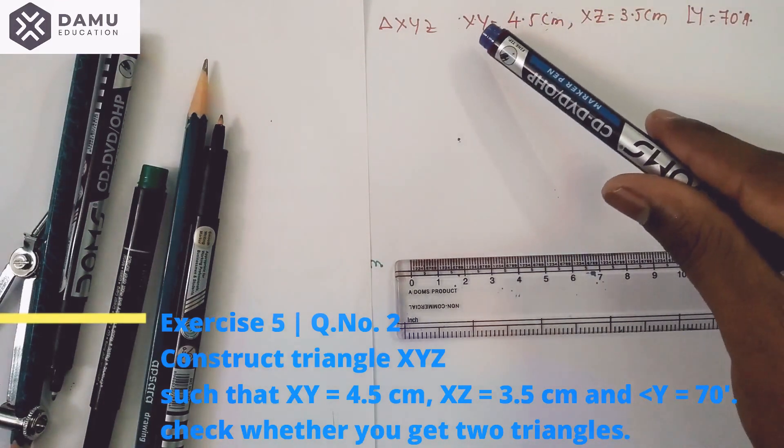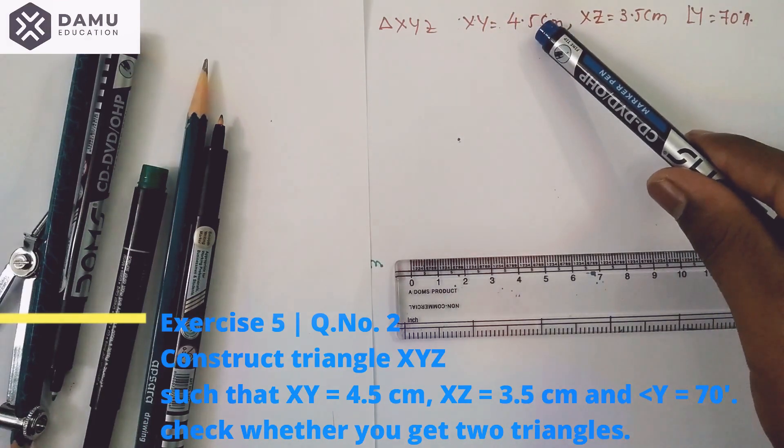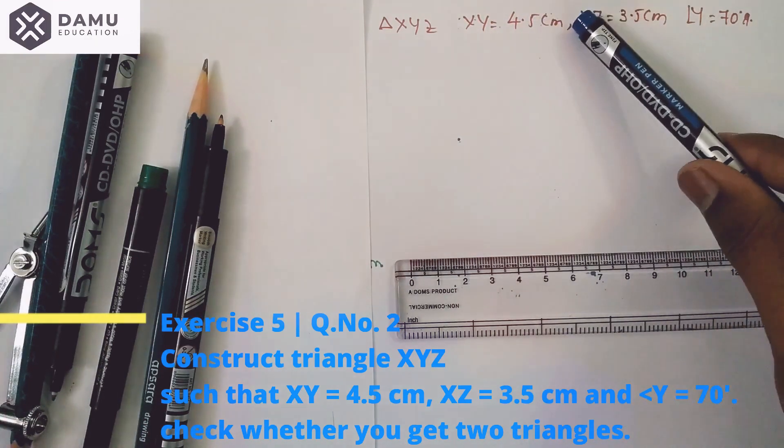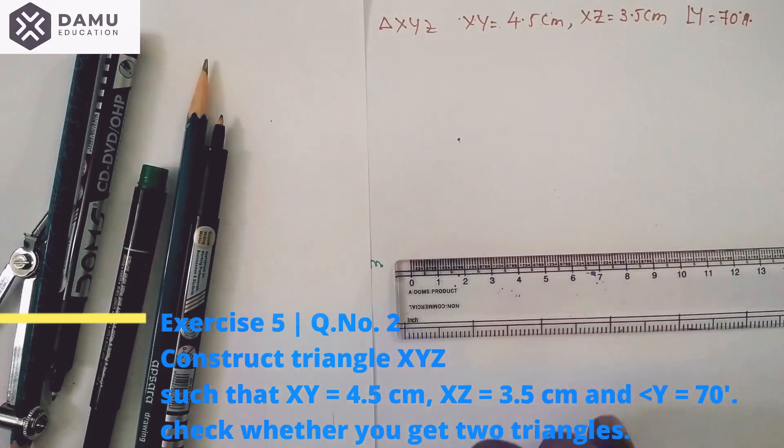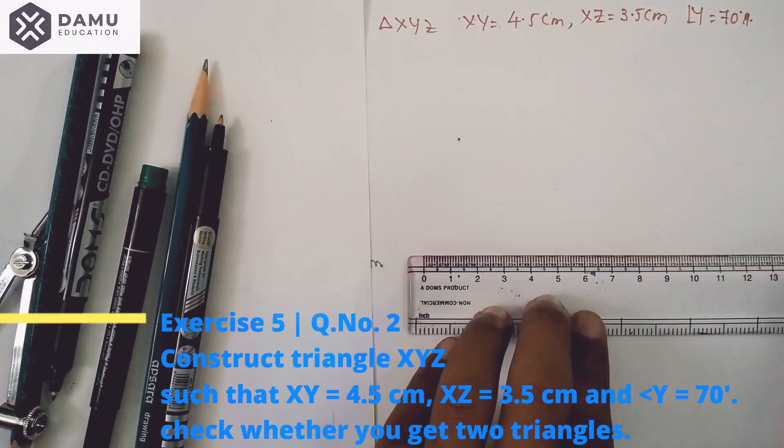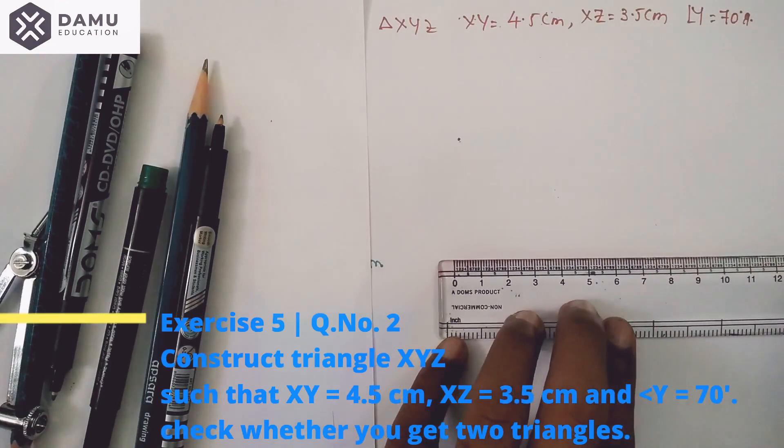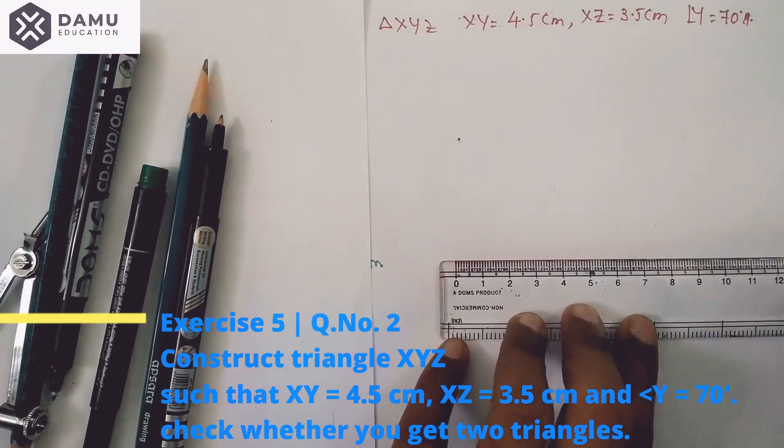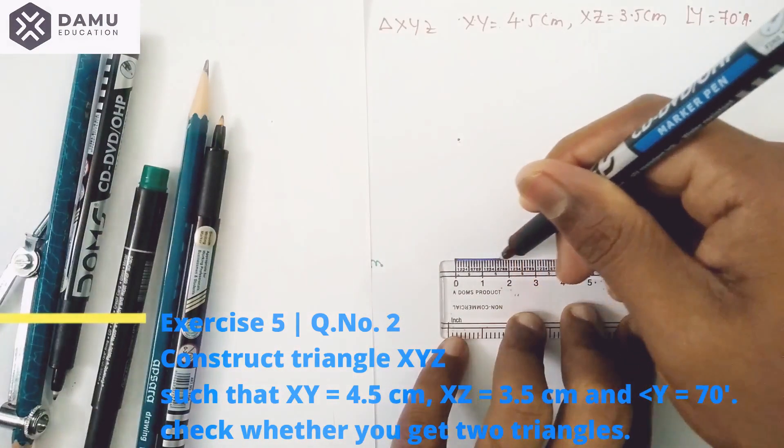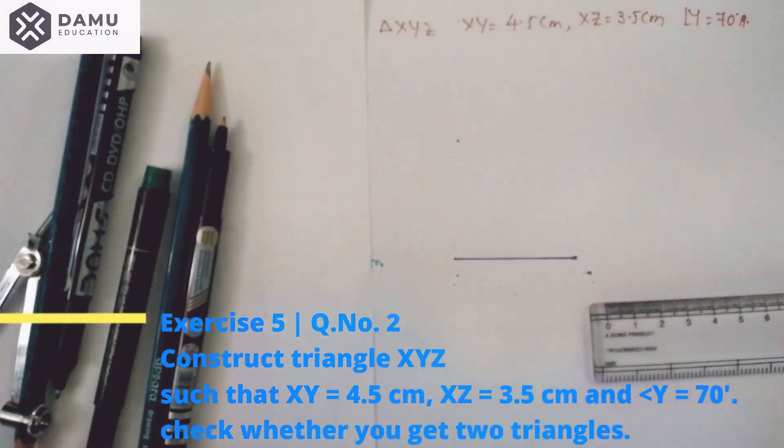For that vertex Y, you have to first draw 4.5 cm as the base. Keep your scale horizontally and draw one line segment with 4.5 centimeters from 0 to 4.5. This is XY, so 4.5 centimeters.